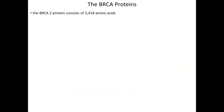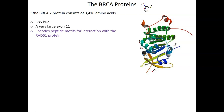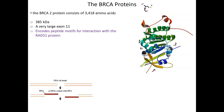The BRCA2 protein is also large, consisting of 3,418 amino acids — 385 kilodaltons. It is characterized by having one of the longer exons in our genome. Exon 11 of this gene is very long and encodes the peptide motifs for interacting with RAD51. RAD51 and all the RAD proteins are major players in DNA repair. In fact, RAD stands for radiation damage, so these are proteins commonly involved in fixing mutations and double-strand breaks.